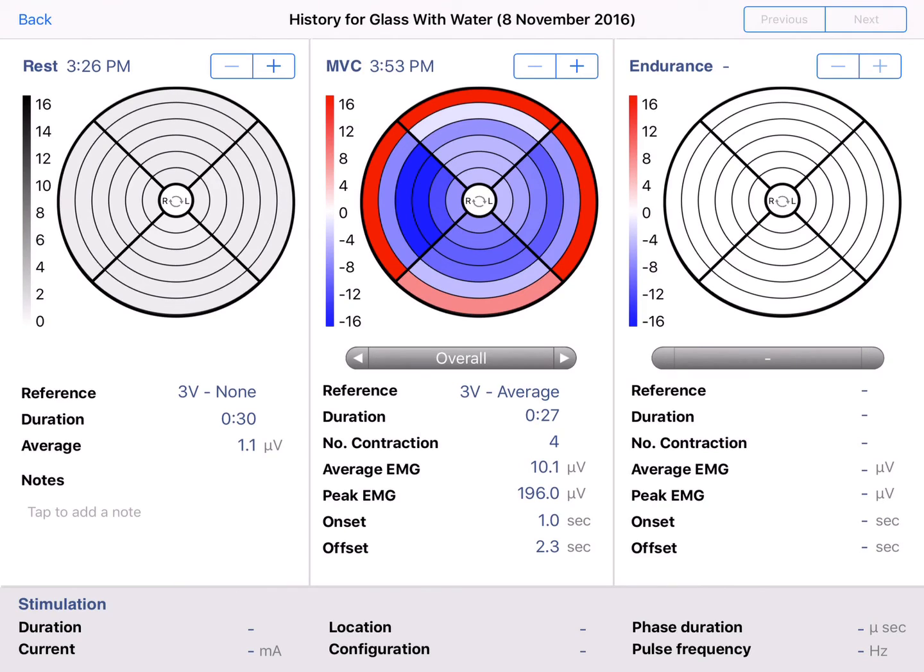You can view the saved rest measurements by using the plus button. You can view the saved MVC measurements by using the plus button as well. Now you can also flip through the different contractions. Thank you.